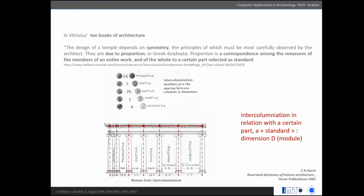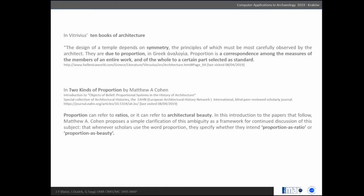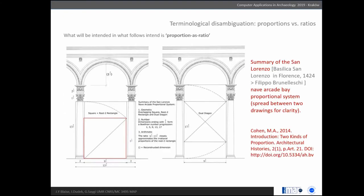But this interpretation of proportion is not the only one in architectural discourse. You'll find the word used as a synonym of architectural beauty. Matthew Cohen tells us to specify what we mean. I will mention proportion intended as ratio. I'm showing it on one example from Cohen on Brunelleschi's architecture: take one dimension and see what other dimensions are in relation to this first dimension. This is what I mean when I use the word proportion.